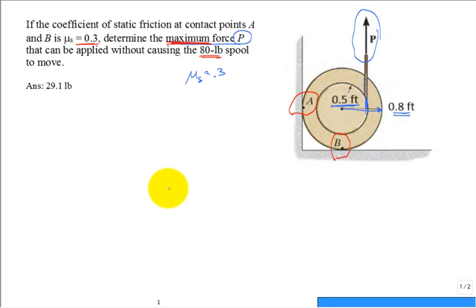Maximum force P that can be applied without causing the 80 pound spool to move. The spool has weight, and right away you can think, where's the center of the spool? Right in the middle. That's where we put the load known as the weight on our free body diagram.